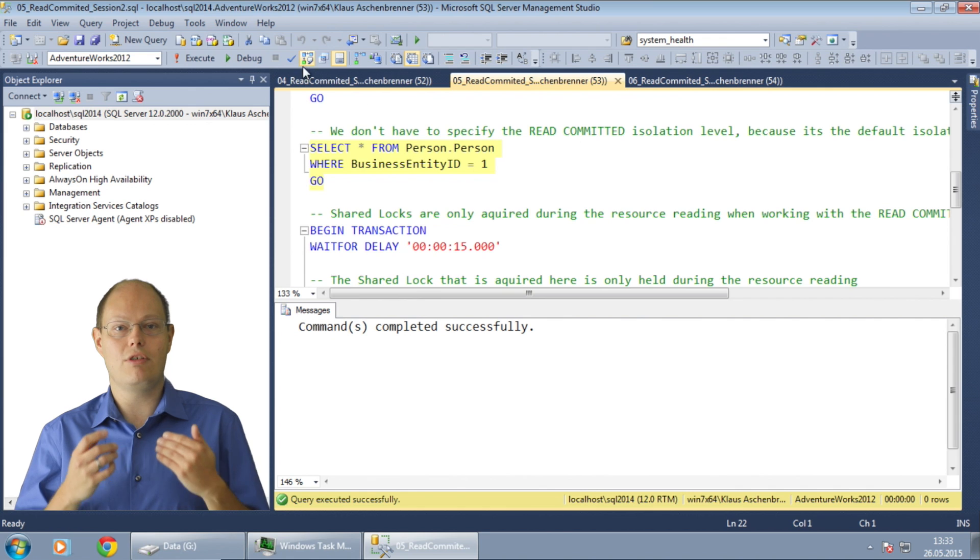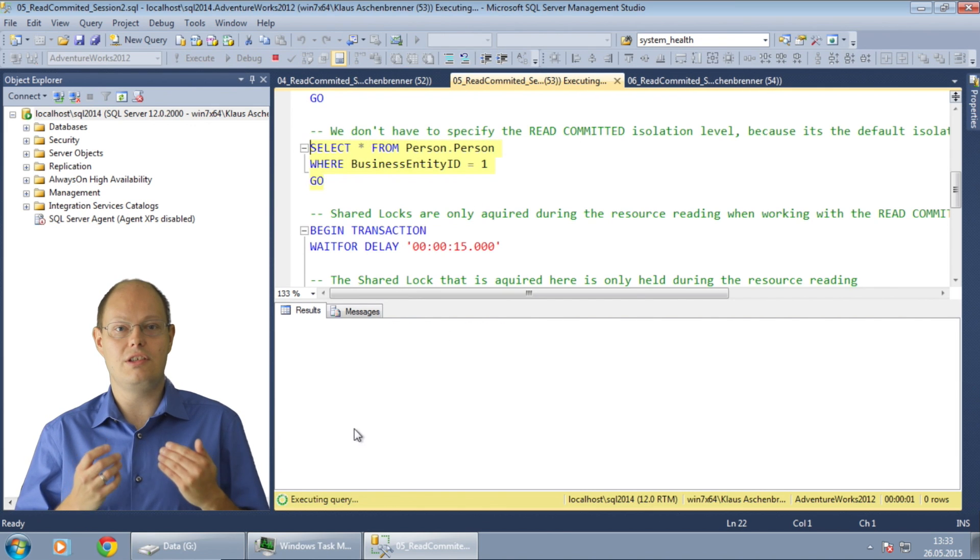When we now try to read from the second session you can see that the select statement is really slow. In our case we have now a simple blocking scenario because you can't acquire the shared lock on this record because the first session has already acquired an incompatible exclusive lock. The writer, the update statement blocks the reader, the select statement. The select statement will just wait indefinitely until the shared lock can be acquired.